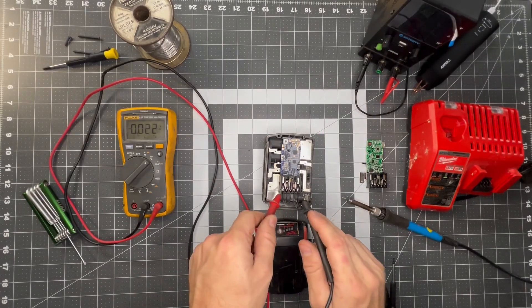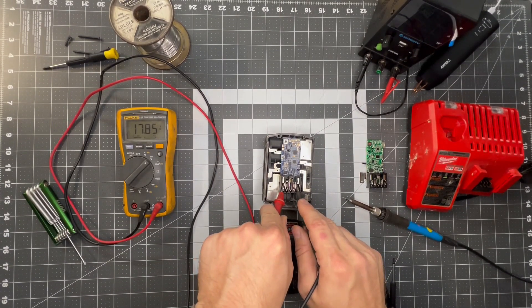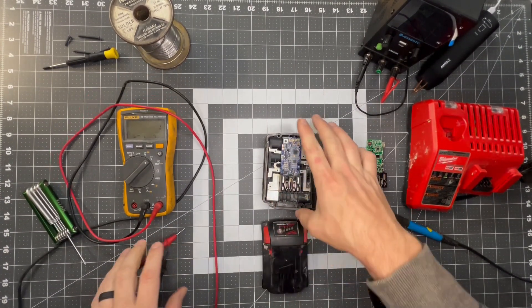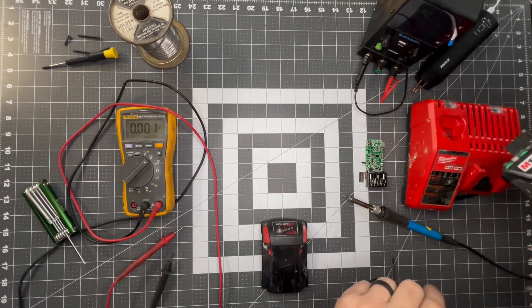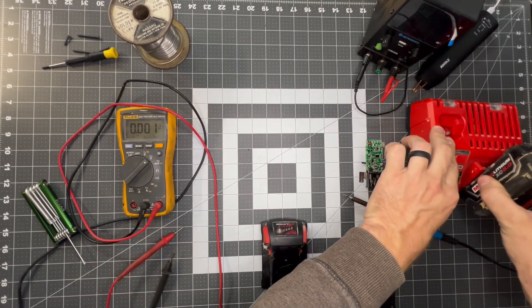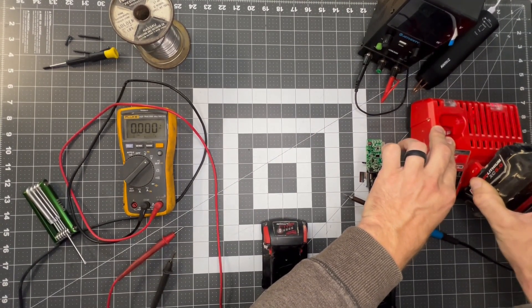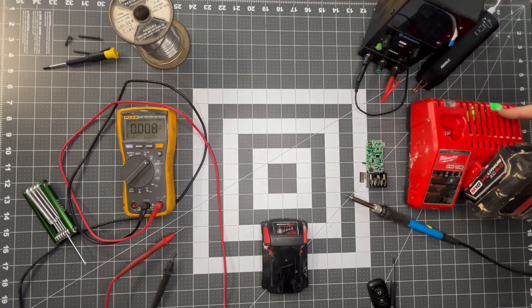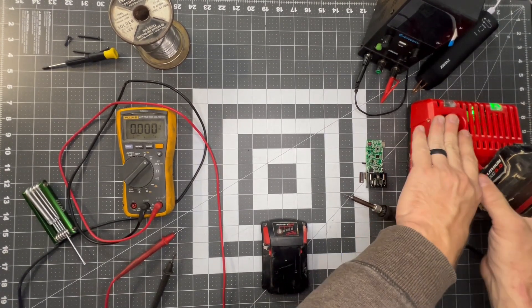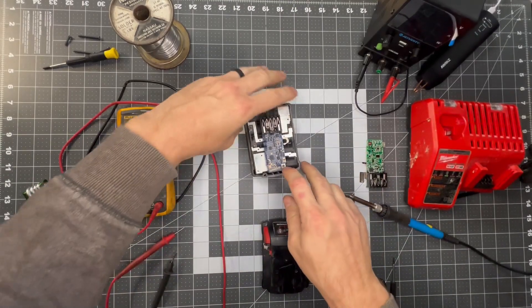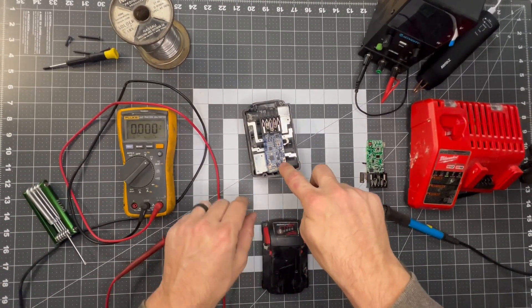While that's soldering iron's heating up, just to show we're still at 17.85 volts on this M18 battery. I'll go ahead and put it in the charger and still get in the defective battery pack and no lights when I push the button.